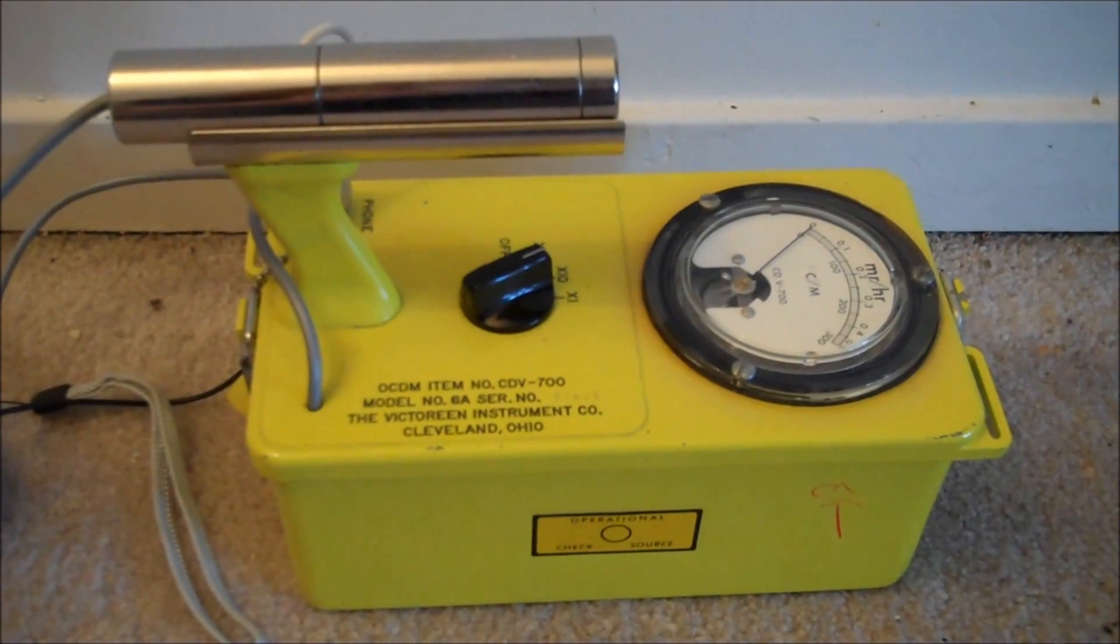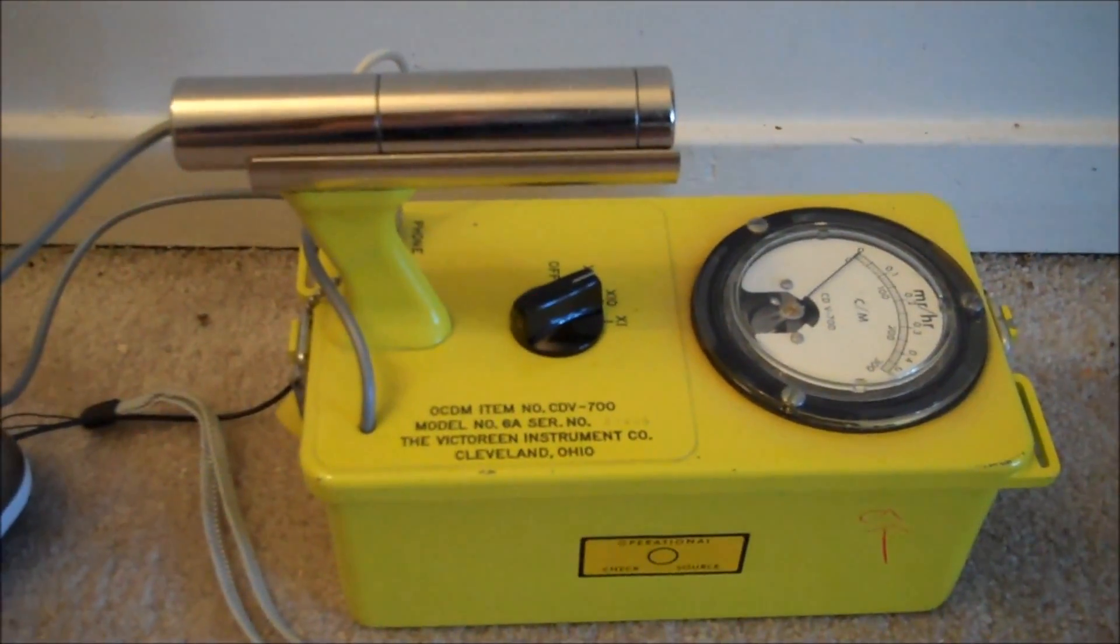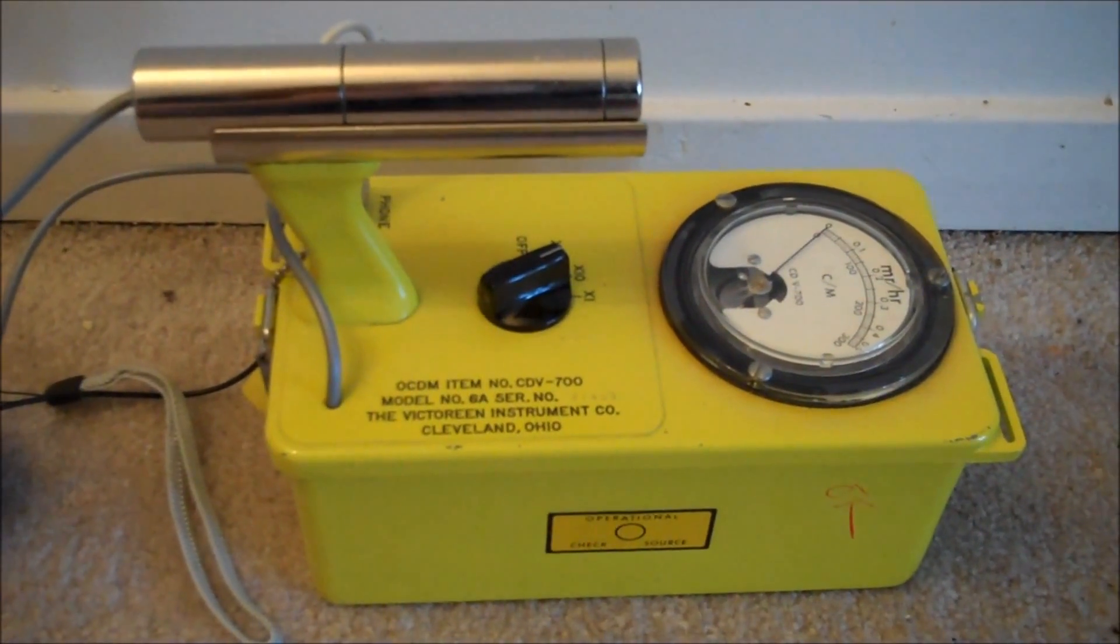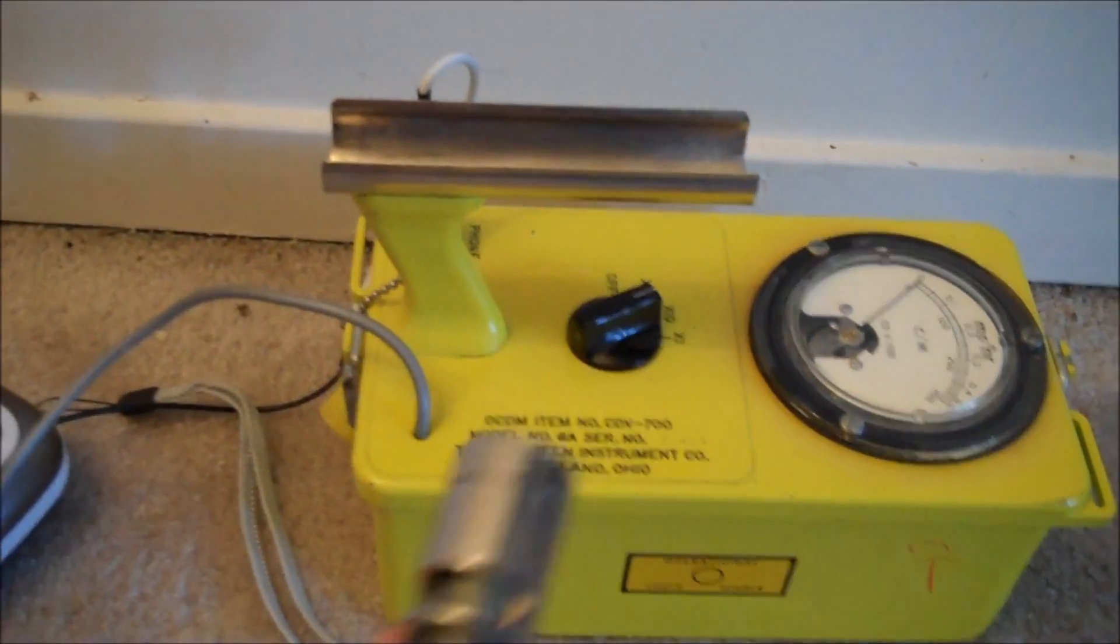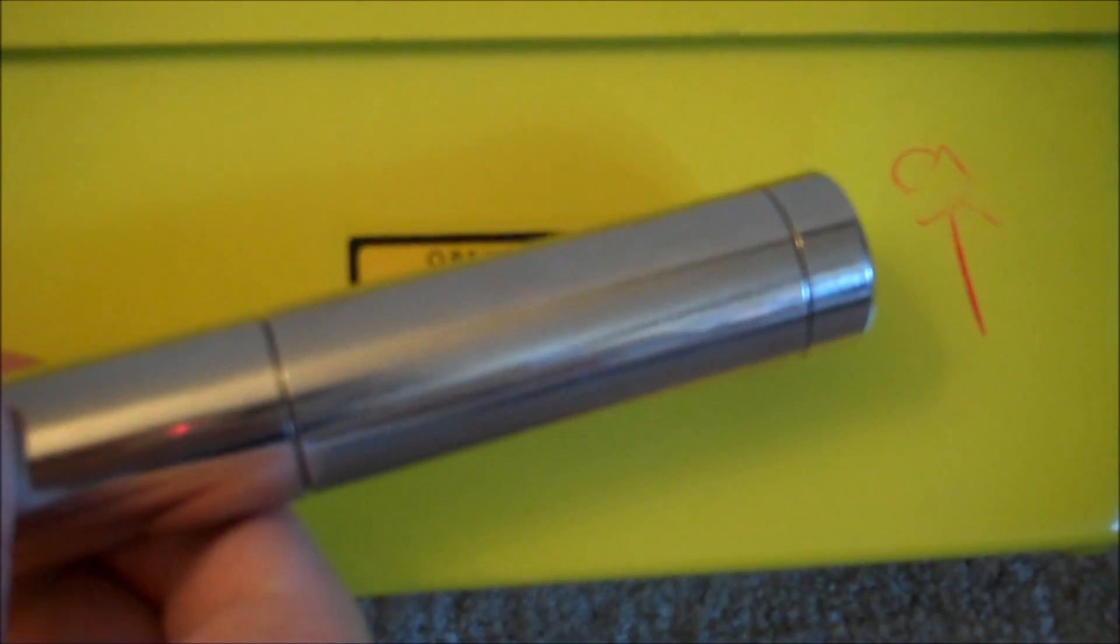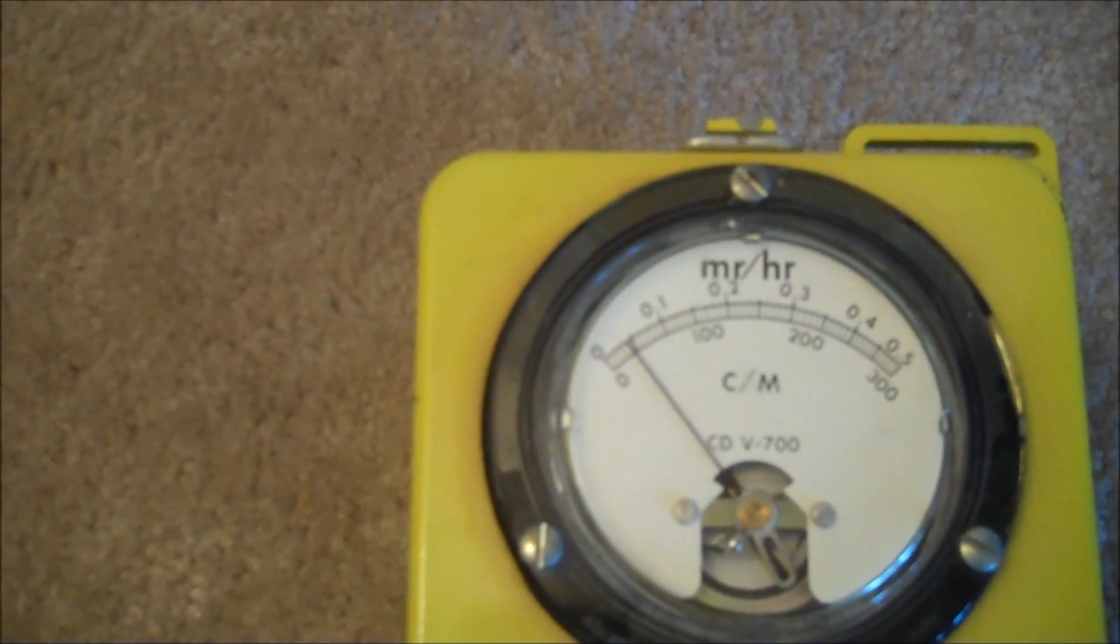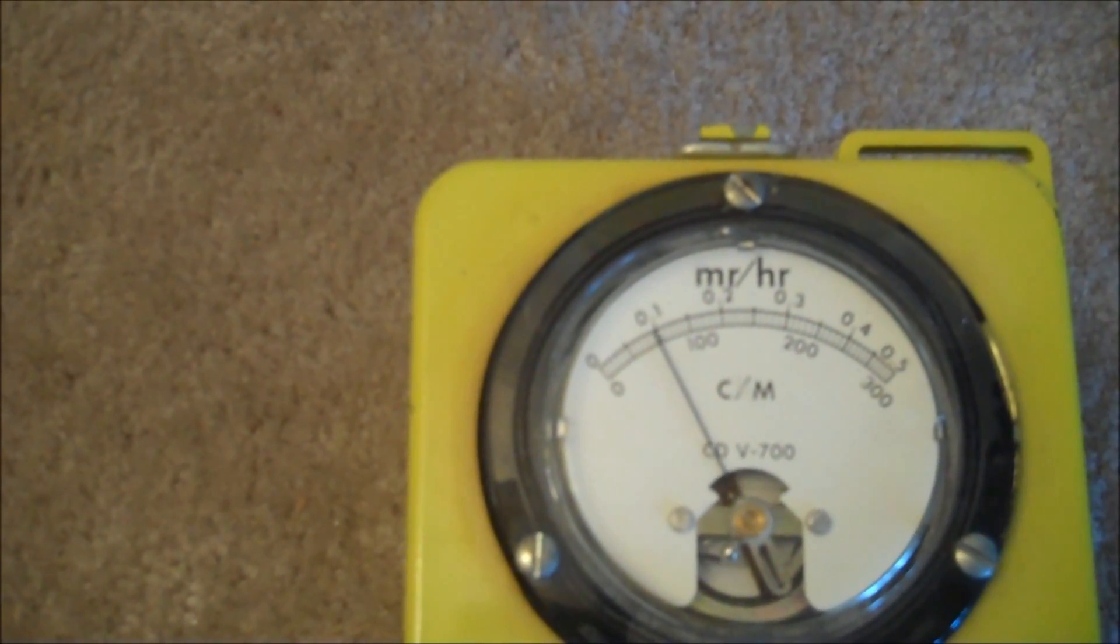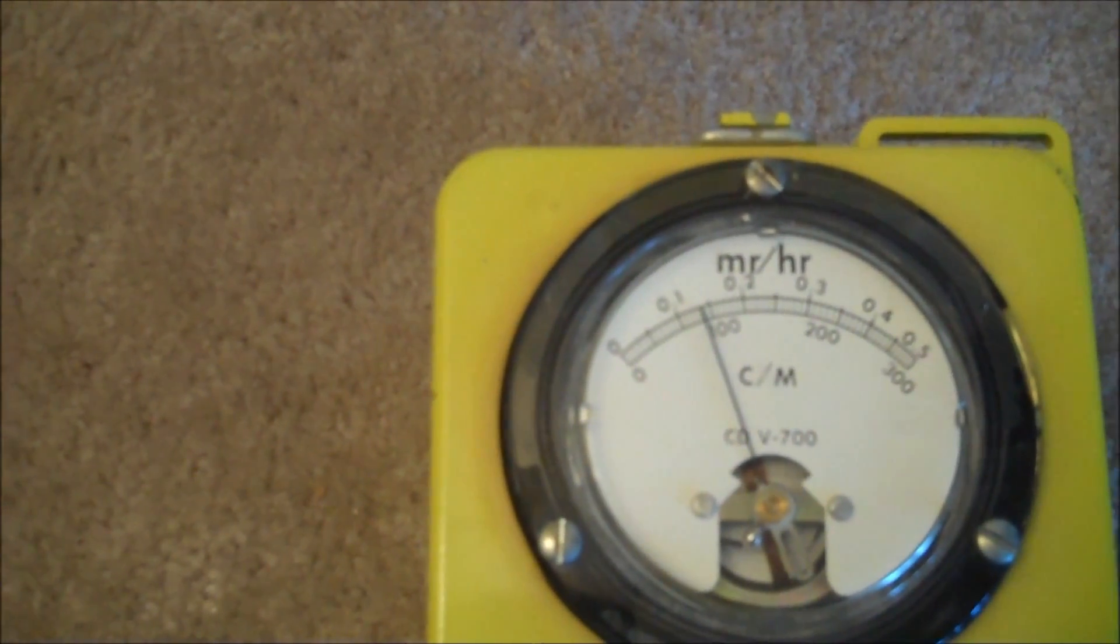Uranium has been used by people for many years. For example, the check source on this 1960s vintage Geiger counter. We can test to see if the Geiger counter is working by using the operational check source on the side. This unit is working.